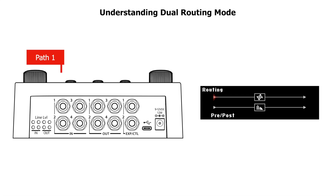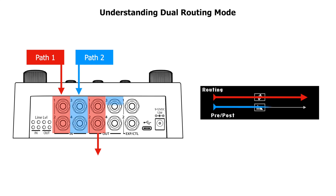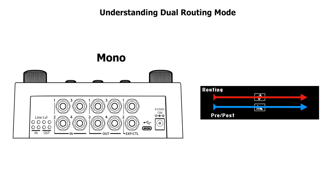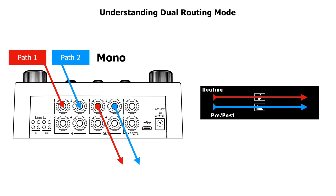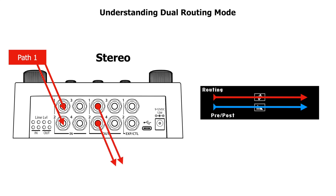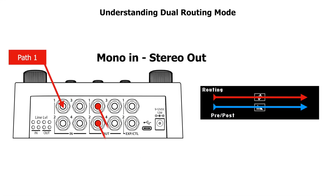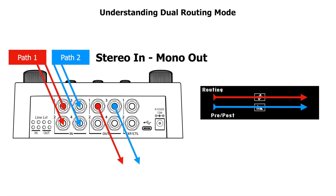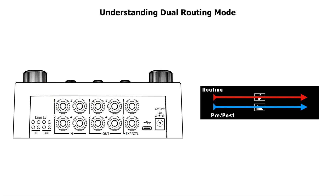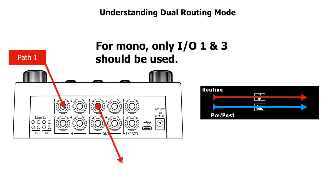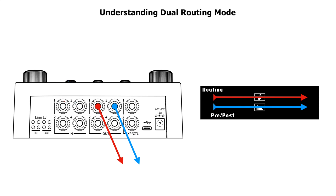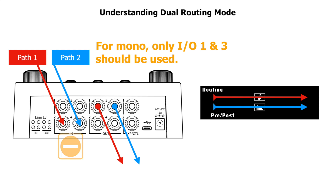There are two independent paths. Path 1 flows from ins 1 and 2 to outs 1 and 2, and path 2 flows from ins 3 and 4 to outs 3 and 4. Each path can function in mono using input and output 1 for path 1 and input and output 3 for path 2, or in stereo using inputs and outputs 1 and 2 for path 1 and inputs and outputs 3 and 4 for path 2. They can also function in mono-in stereo-out or stereo-in mono-out. In dual mode, the H90 is configured to receive mono signals on input 1 for path 1 and input 3 for path 2. Connecting mono signals to input 2 or input 4 only will yield undesired results. The H90 does not function as a 4-in 4-out mono device.